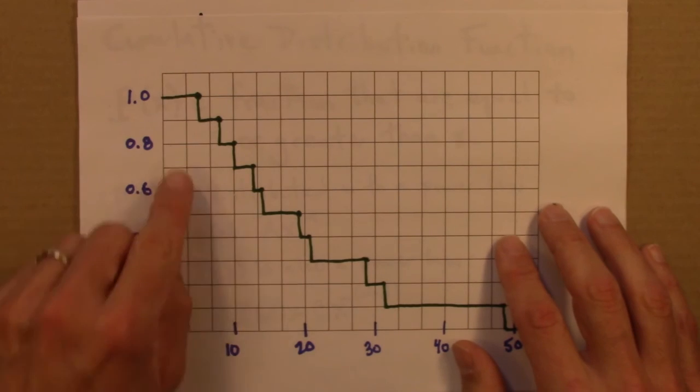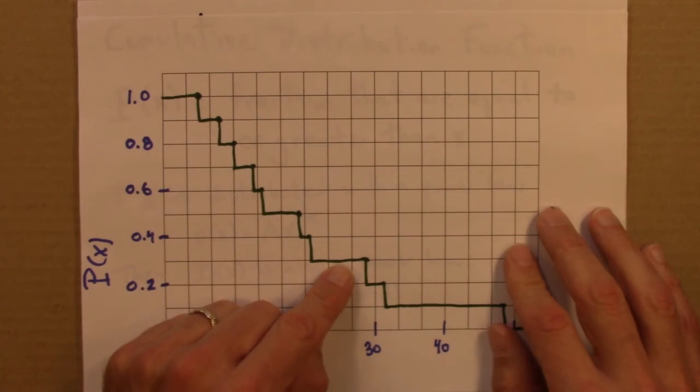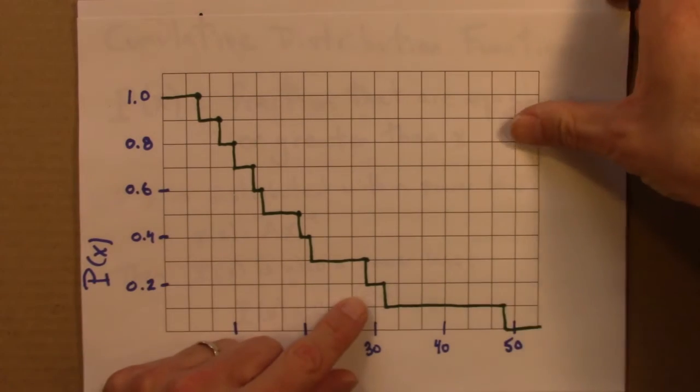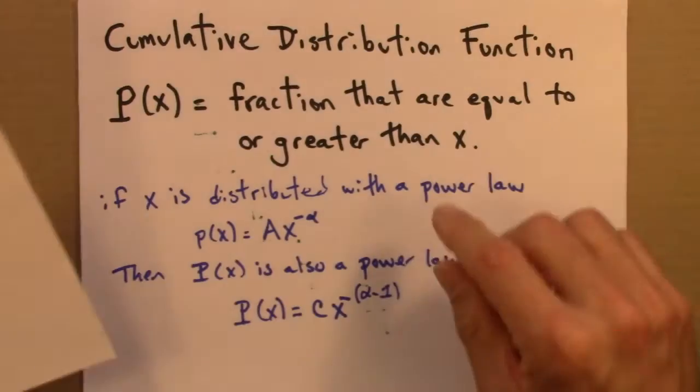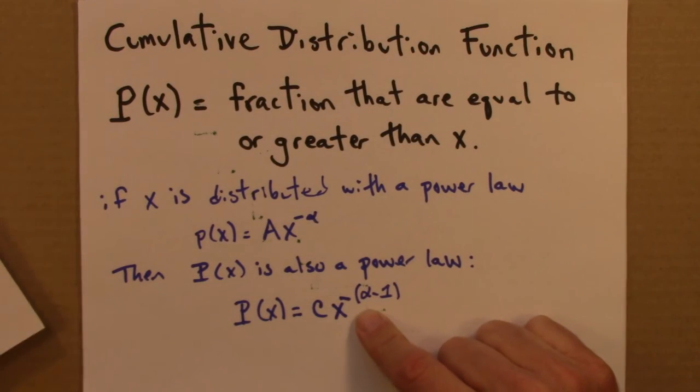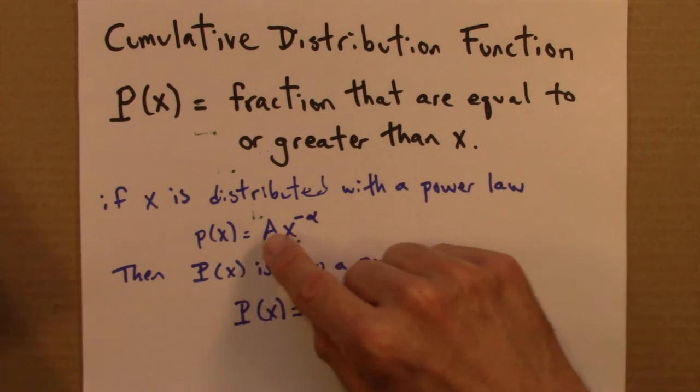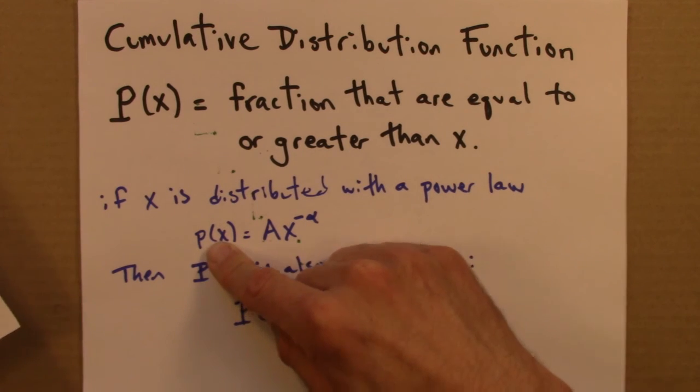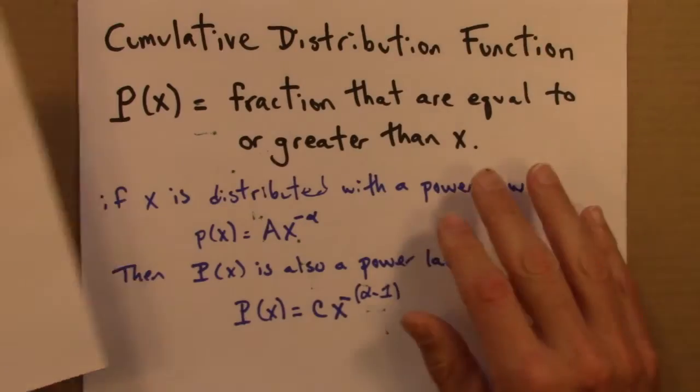And we'll see that even more when we start thinking about how to get power law exponents. And you can see where this is headed. It's going to turn out to be much better to use the cumulative distribution function to estimate an exponent than the distribution itself.